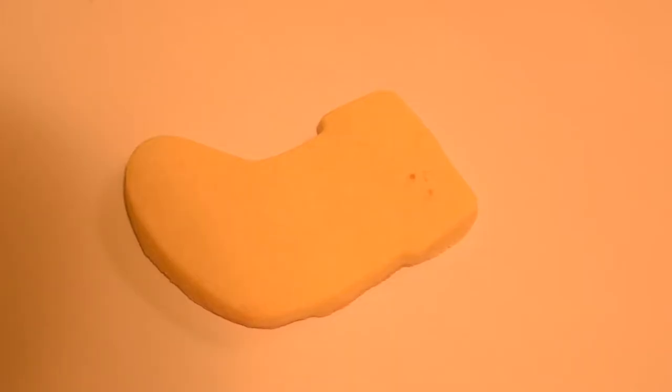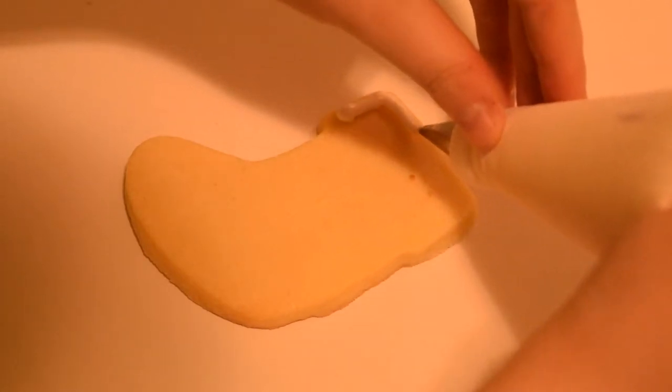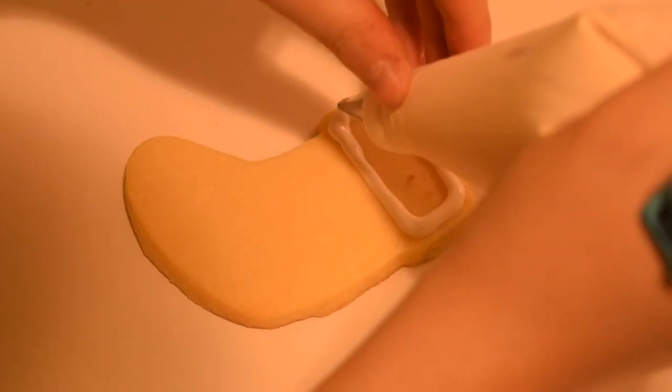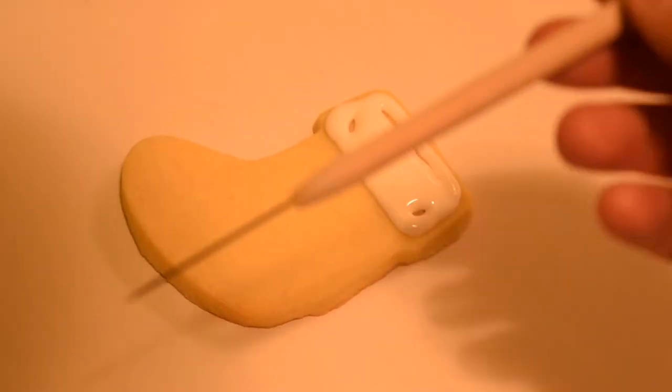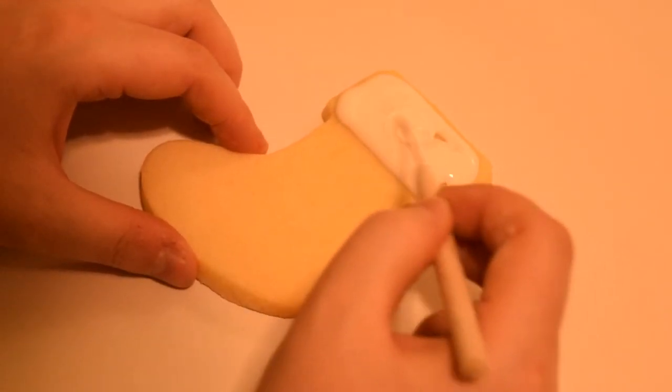Now we can begin icing our cookies. To start I get my flood consistency white royal icing and pipe the top of the stocking. Using the scribe tool I just work the icing until it's consistent and smooth.